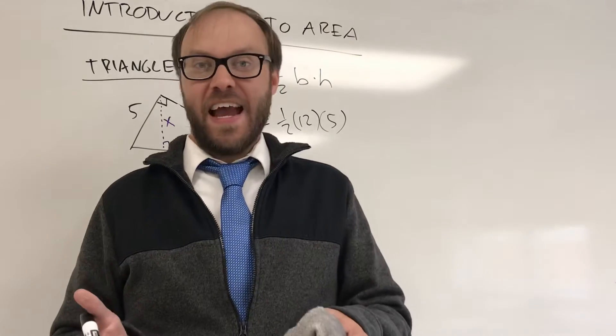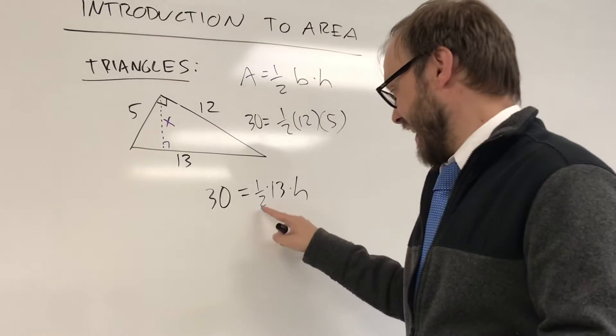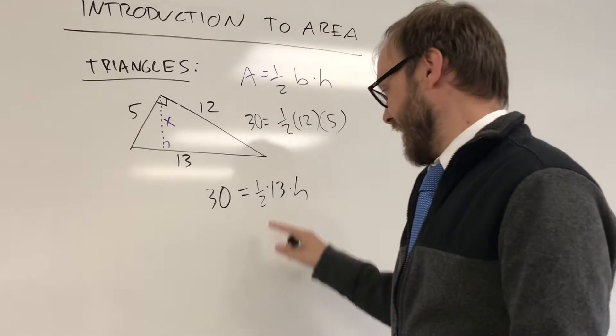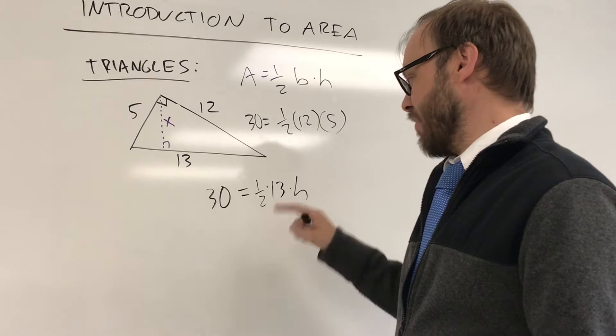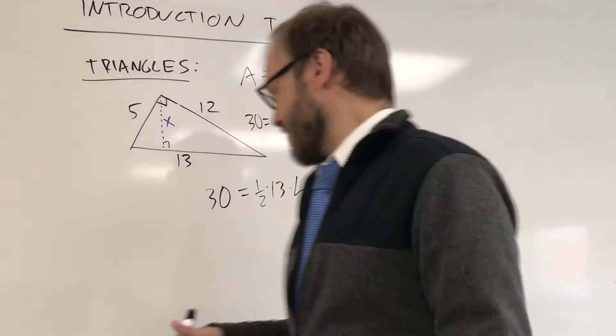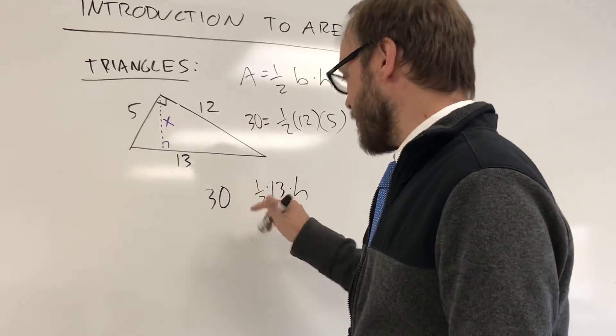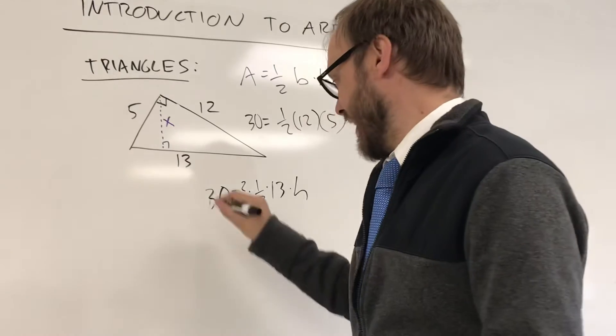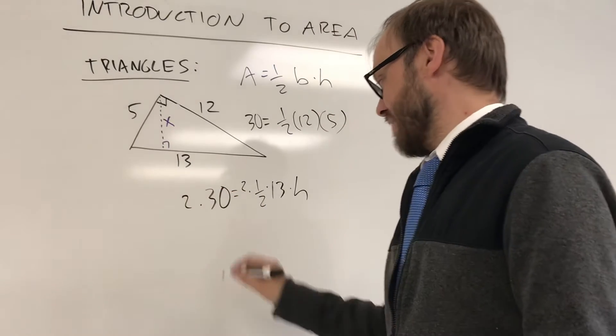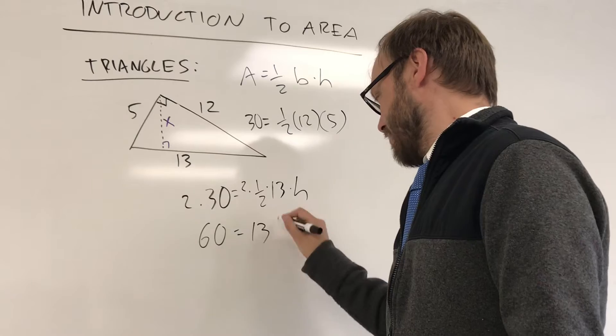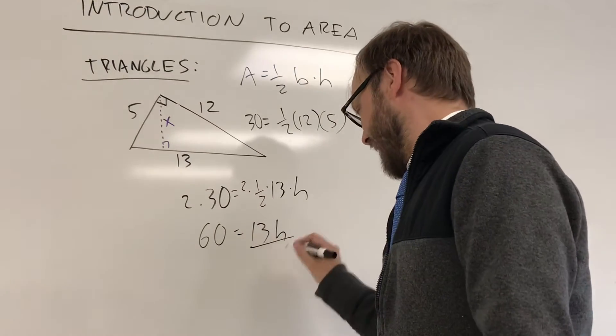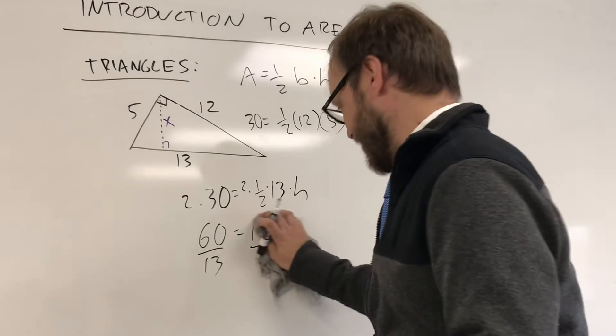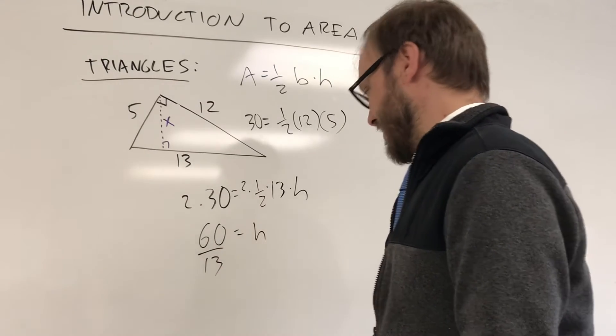I just have to figure out what does that height have to be so that I take half of 13 and multiply it by the height and get 30. Just solve the equation. Half of 13 is 6.5. You might deal with it that way. I don't love dealing with fractions in these problems, so I would probably double both sides of the equation. I take half of something, I can undo it by doubling it. But it's an equation, so I have to double the other side as well. I'll get 60 is equal to 13h. H is being multiplied by 13. I'm going to divide by 13. And so h is going to be 60 thirteenths.